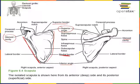On the anterior surface, we see the subscapular fossa. The subscapular fossa is the origin for a muscle called the subscapularis muscle, one of the muscles that moves the humerus at the shoulder joint. On the posterior view, we can see there are two fossae: a supraspinous fossa and infraspinous fossa, which are also the origins for muscles that move the shoulder joint — supraspinatus and infraspinatus.